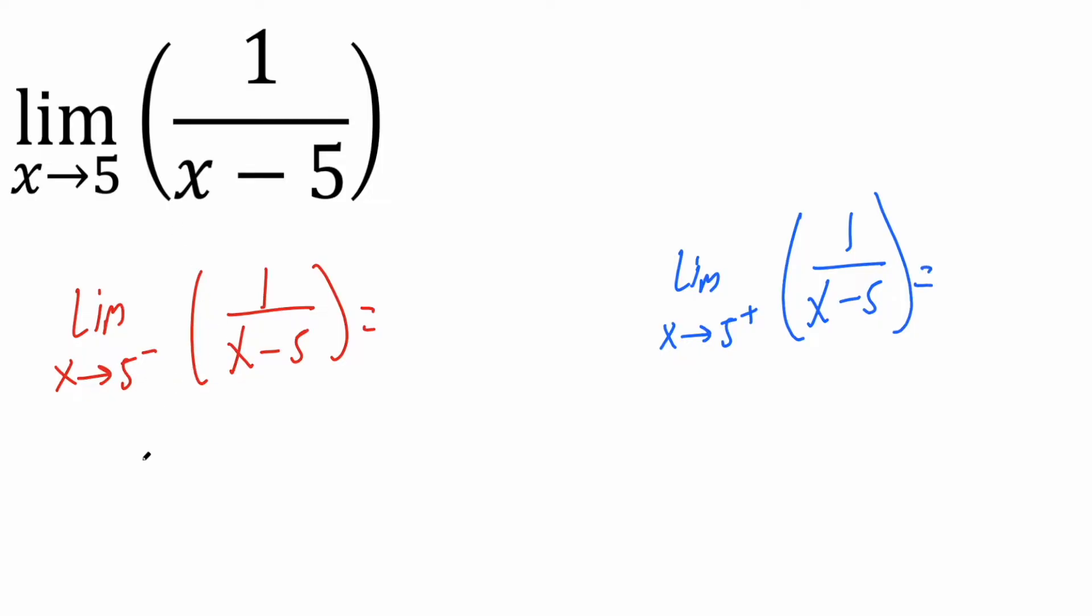So 5 to the left, that's like 4 point a bunch of 9 repeating. Because if you draw a number line, 5 is right here. To the left is like 4 point a bunch of 9s, and to the right is 5 point a bunch of 0s, 1.